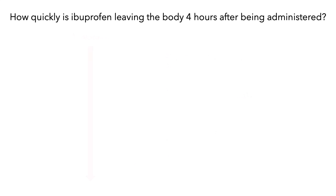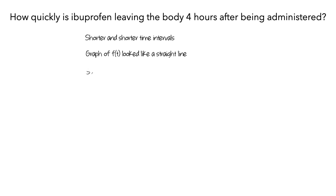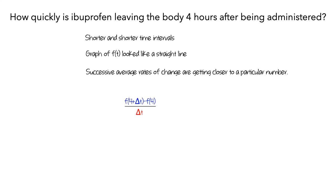To summarize what we've observed: as we look at shorter and shorter time intervals, the graph of f of t looks more and more like a straight line — it is getting closer to having a constant rate of change. As this happens, the successive average rates of change are getting closer to a particular number. In more formal notation, we write f of (4 plus delta t) minus f of 4, all divided by delta t, to show the average rates of change. We write delta t goes to zero to represent the decreasing length of the time intervals, and we write the limit to indicate the number that these are all getting closer to. It's important to remember that the limit isn't itself an average rate of change — it's a number that the average rates of change are approaching.